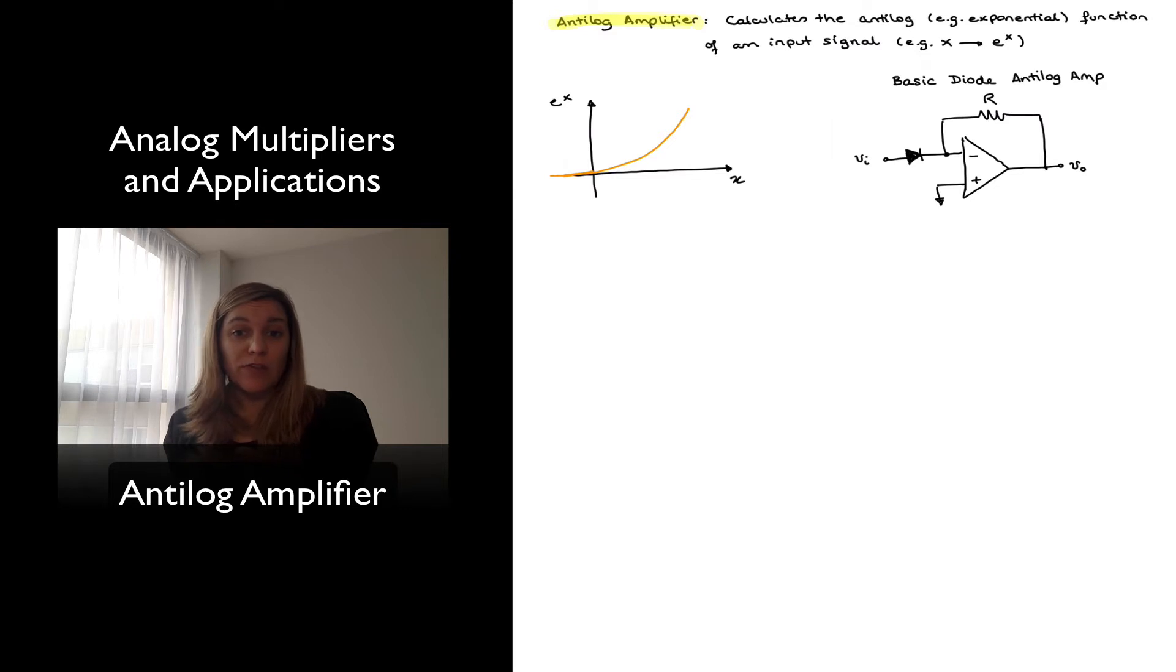The anti-log amplifier, as I mentioned, calculates the anti-log, or exponential, function of an input signal. So if the signal is x at the input, the output signal should be proportional to e to the x.